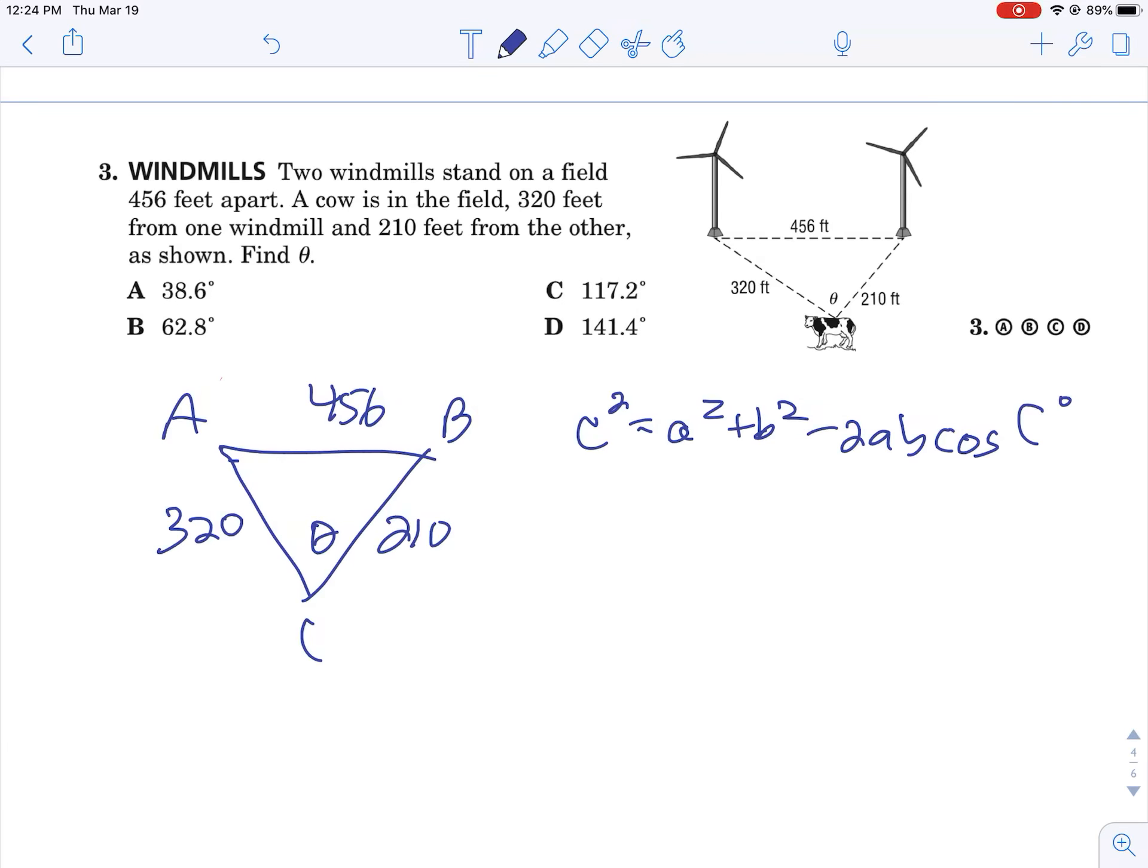Now let's throw everything in. We know 456 squared equals 210 squared plus 320 squared minus 2 times 210 times 320 cosine of theta, because angle C is theta.